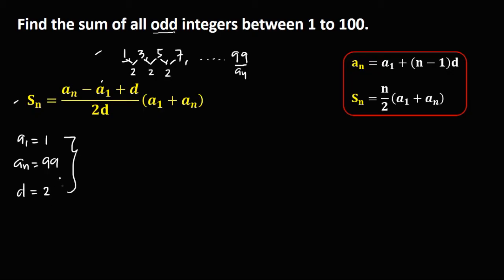Then substitute these values to this formula to solve for the total sum of all odd integers. So we have now, total sum equals a sub n, and a sub n is 99, then minus a sub 1, a sub 1 is 1.